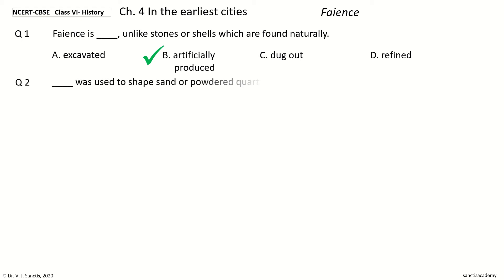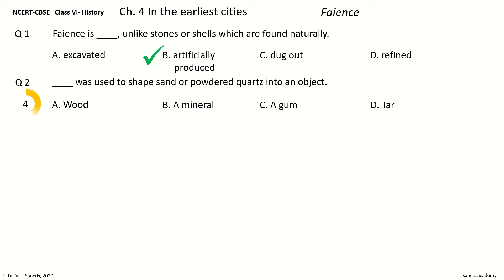Question 2. Dash was used to shape sand or powdered quartz into an object. The options are: wood, a mineral, a gum, tar. And the answer is a gum. So, a gum was used to shape sand or powdered quartz into an object.